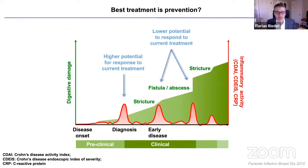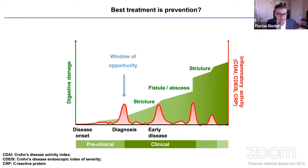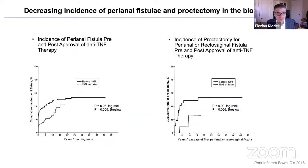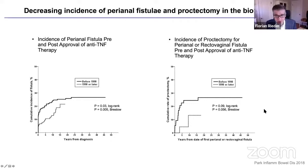One may always ask: is prevention the best therapy? We know that we have a relapsing-remitting inflammatory disease course, but over time, patients develop tissue damage in the form of strictures, fistulas, or abscesses. Biologics work better early on compared to later in the disease course, so there may be a higher potential for response early in a window of opportunity. In fact, the incidence of perianal fistula and proctectomy is decreasing in the biologic era, indicating that biologic therapy appears to help prevent perianal disease.